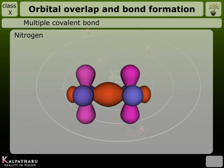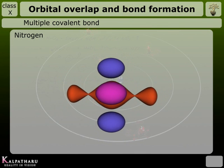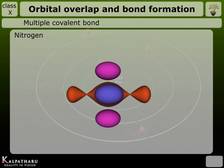The two 2pₓ and two 2pᵧ orbitals overlap sideways to give rise to two pi bonds. Thus, in nitrogen, a triple bond—one sigma and two pi bonds—is formed.